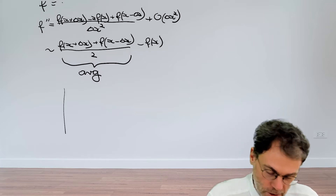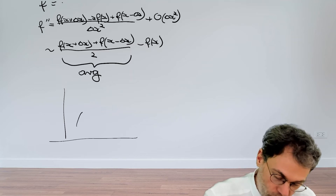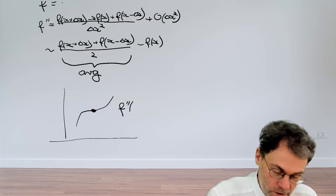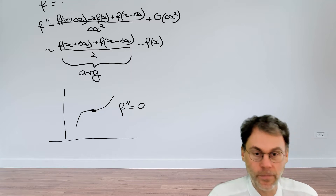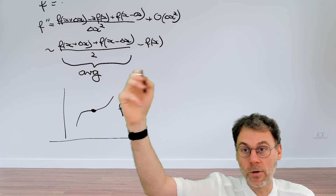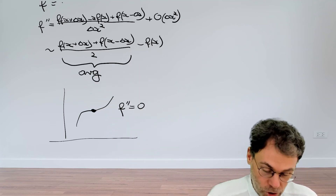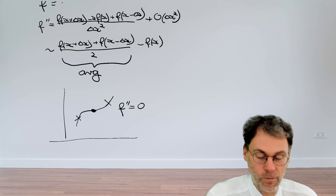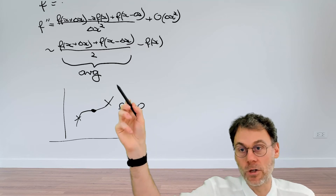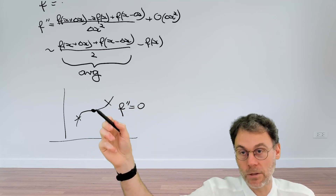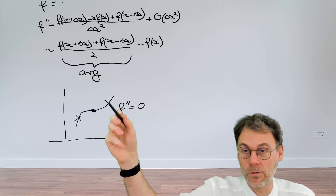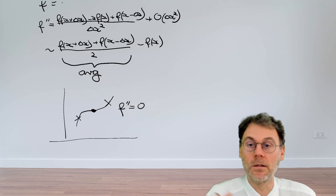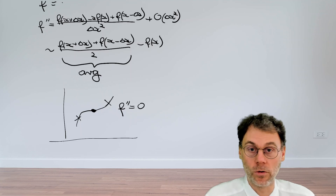You can see this in a drawing: if the second derivative is zero at a point, the average of the function in its surroundings equals the value of the function there, so subtracting gives zero. This illustrates that the central difference formula is a sensible geometric interpretation of the second-order derivative.